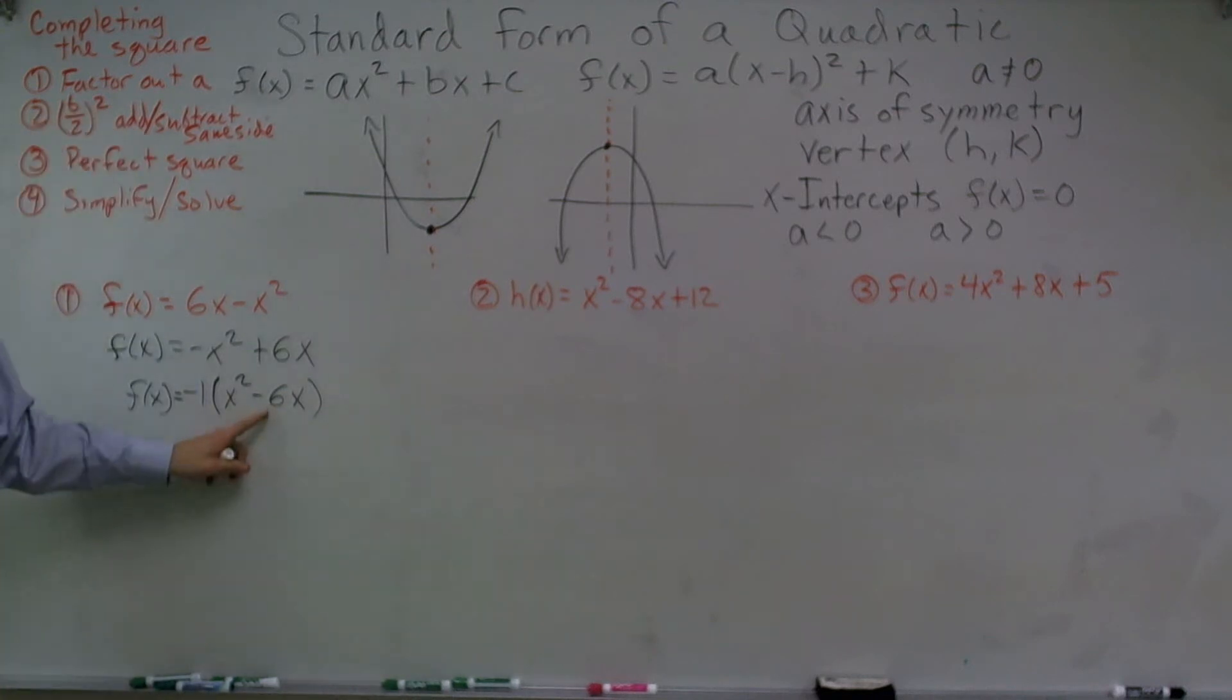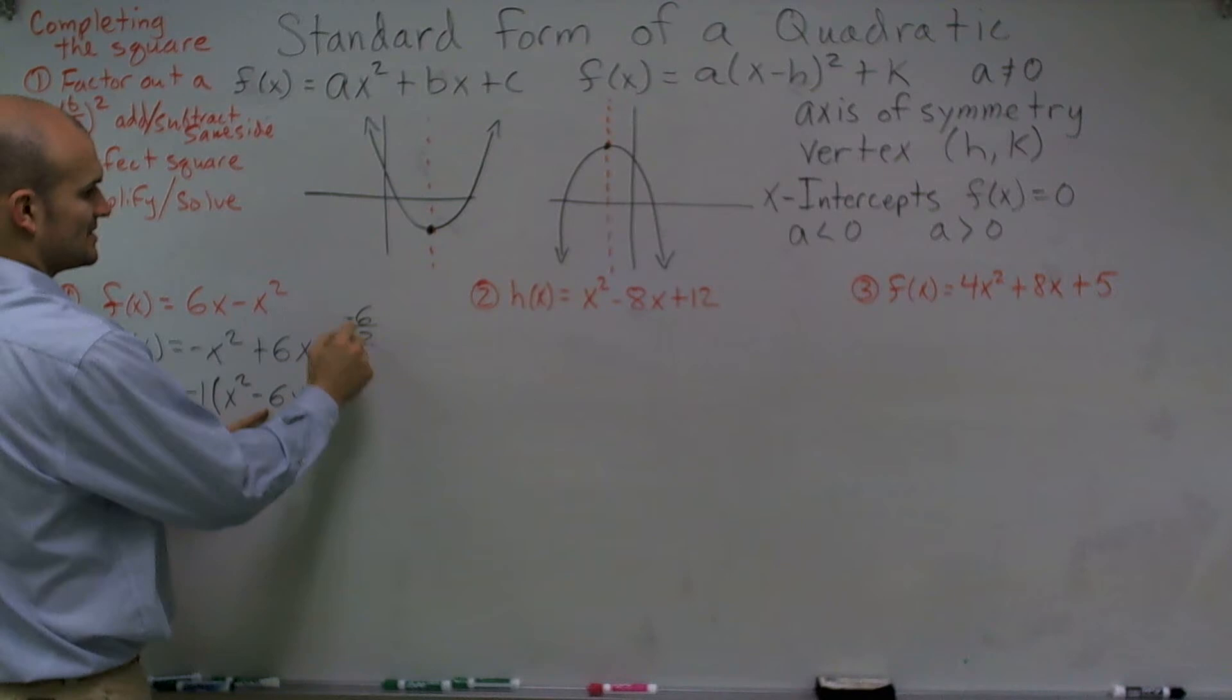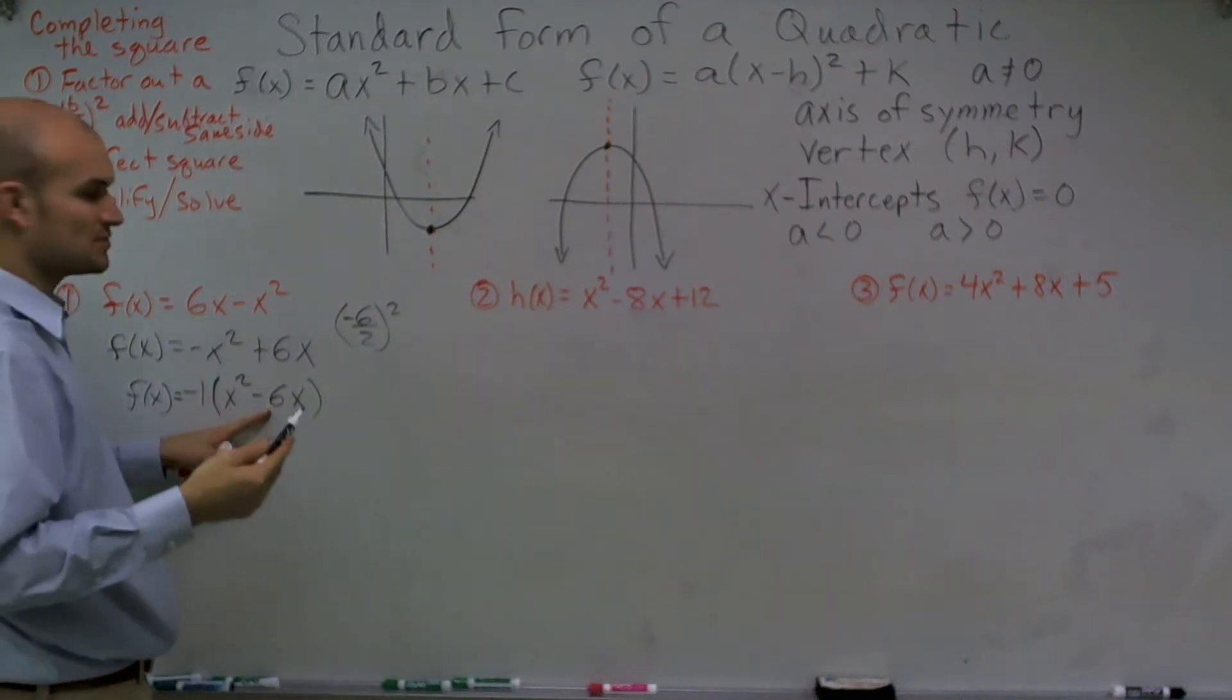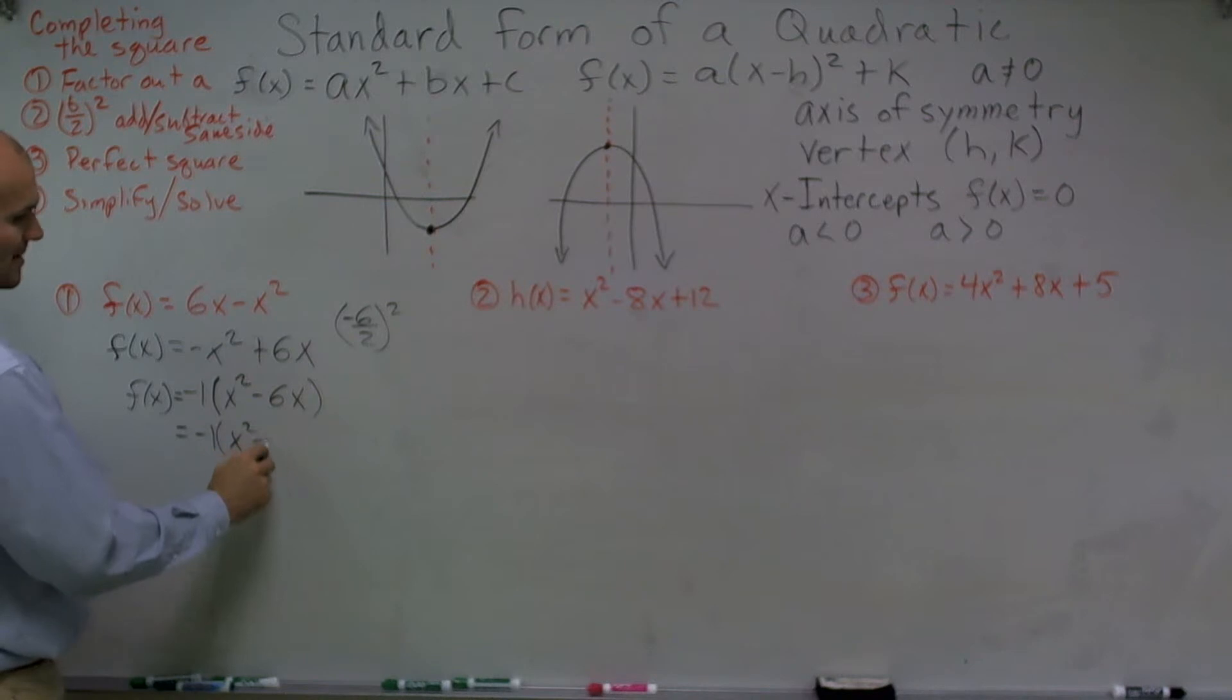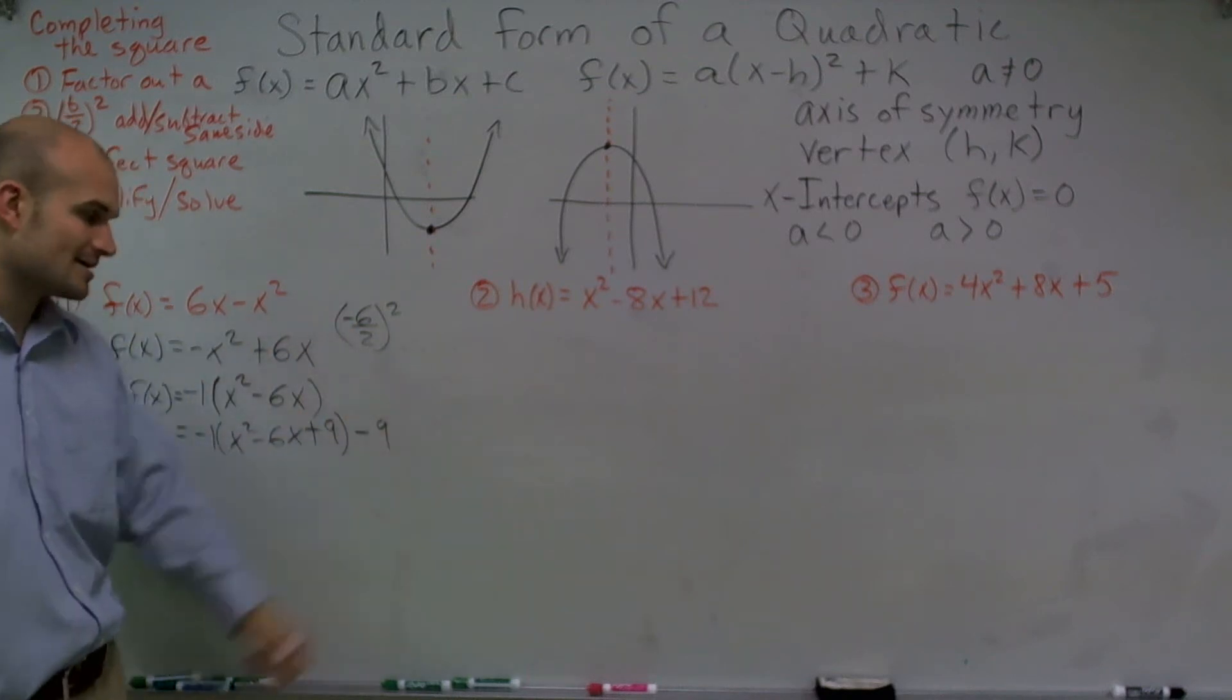So now what I need to do is take my b, which is my negative 6, divide it by 2, and then square it. So negative 6 divided by 2 is negative 3. Negative 3 squared is 9. So now I have -1 times x² - 6x + 9 - 9. Remember, whenever we add something to our equation, we also need to make sure we subtract it.